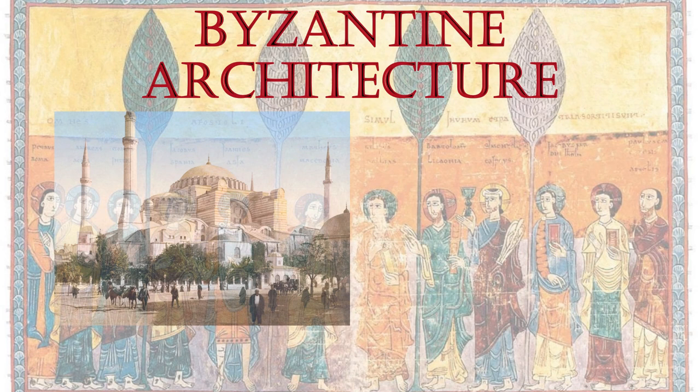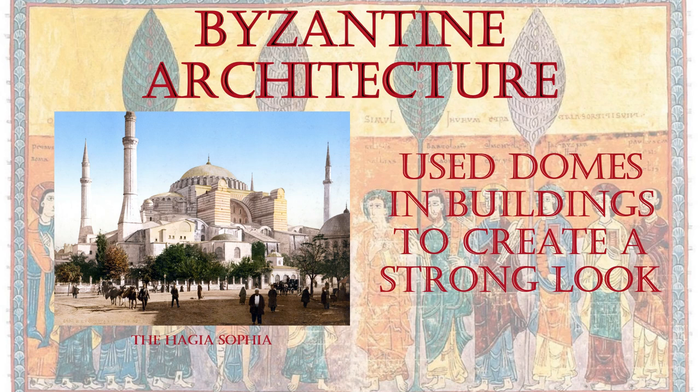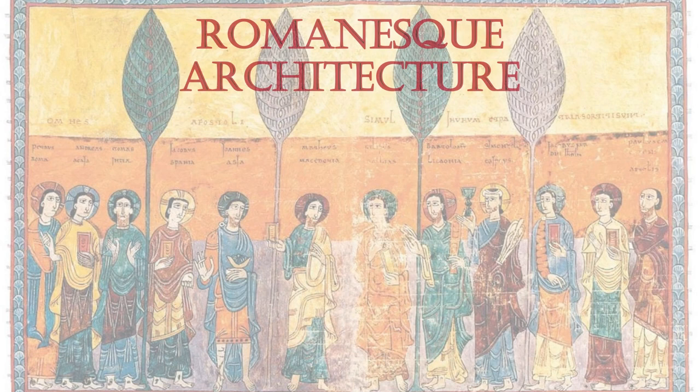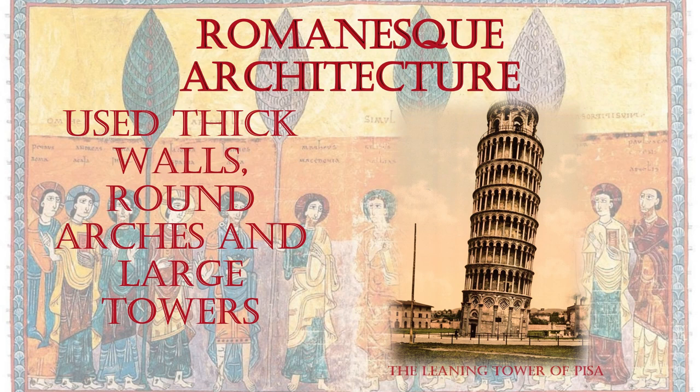Byzantine architecture used domes and buildings to create a strong look. An example is the Hagia Sophia. Romanesque architecture used thick walls, round arches, and large towers. An example is the Leaning Tower of Pisa.